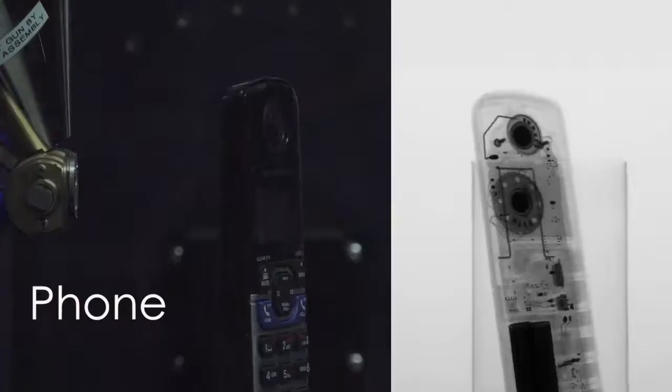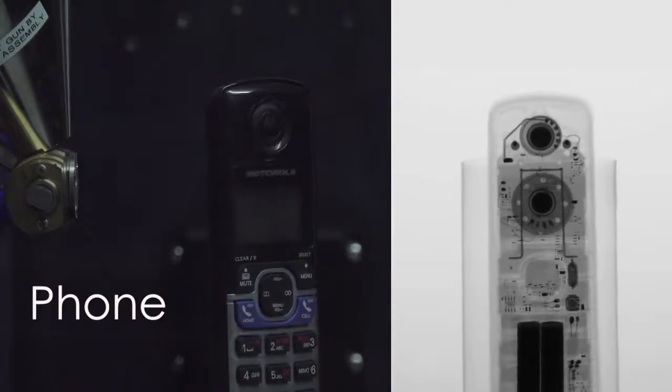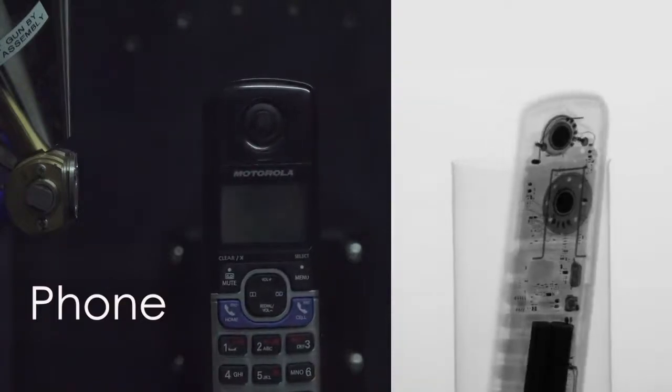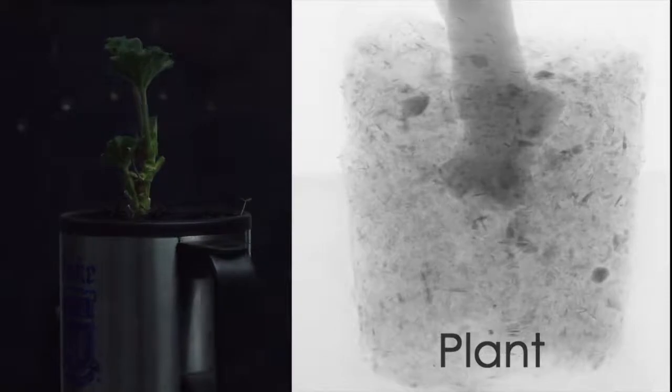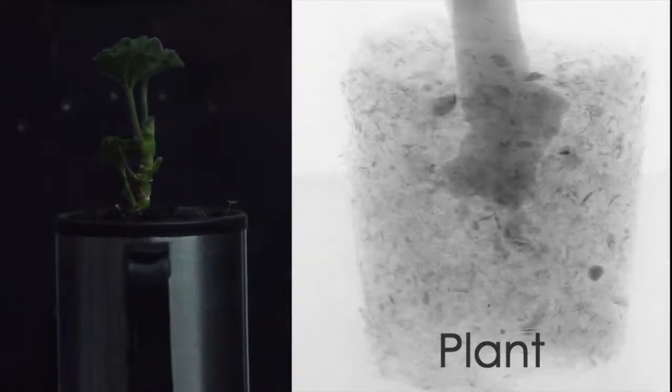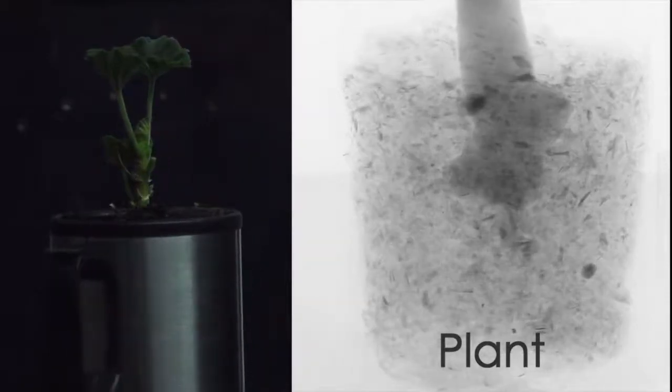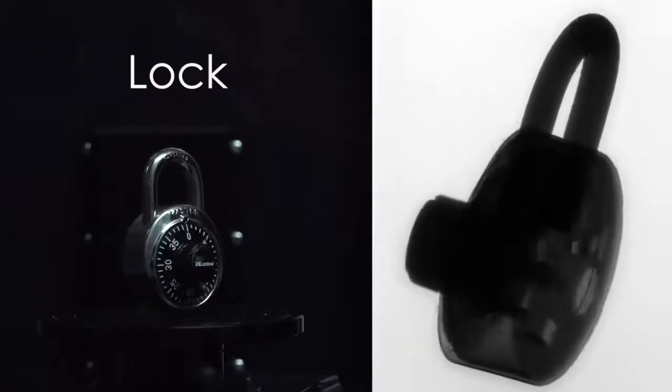The stage that holds the samples in the MicroCT spins around while the rest of the equipment stays stationary. This is unlike a CT scanner in a doctor's office where the machine wraps around a patient.